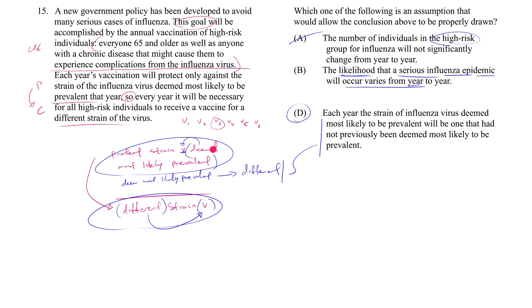The likelihood of an epidemic varies, but that could be driven by the same strain or different strains — it depends on many things: the virulence of the virus, social factors, how well-prepared a society is for a serious epidemic. So B, like A, just doesn't understand what we're trying to accomplish here.